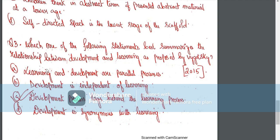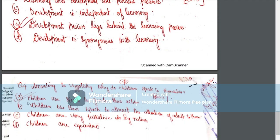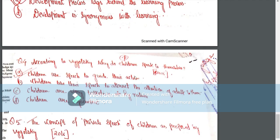Exam question: Which of the following statements best summarizes the relationship between development and learning as proposed by Vygotsky? Options include: development and learning are parallel processes; development is independent of learning; the development process lags behind the learning process; development is synonymous with learning. The answer is option C — the development process lags behind the learning process.